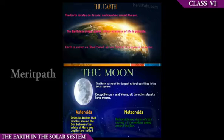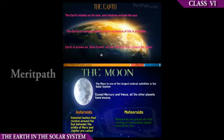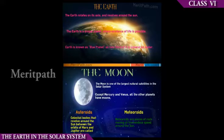Let's quickly see what all we studied in the Earth in the Solar System chapter. Earth rotates on its axis and revolves around the Sun. It is a unique planet because it is the only planet where life exists. It is known as a blue planet as two thirds of it is covered with water. The Moon is the only natural satellite of Earth. Asteroids are celestial bodies that revolve around the Sun between the orbits of planets Mars and Jupiter. Meteoroids are pieces of rock moving at tremendous speed around the Sun.